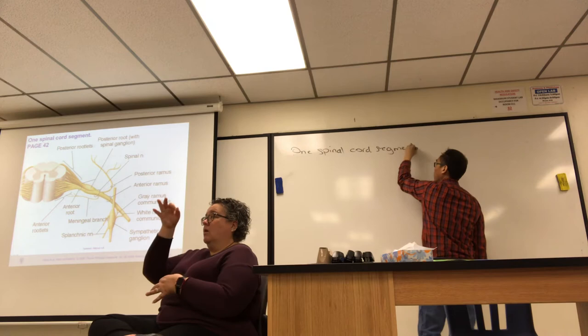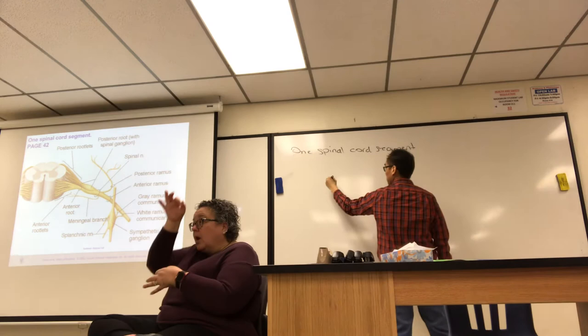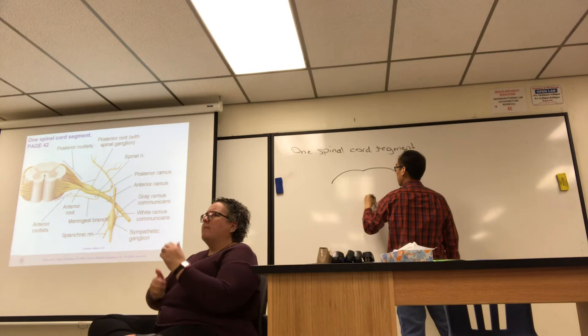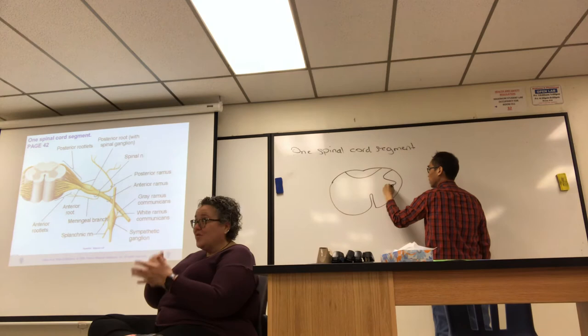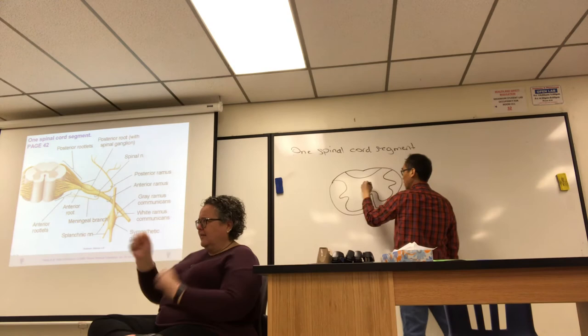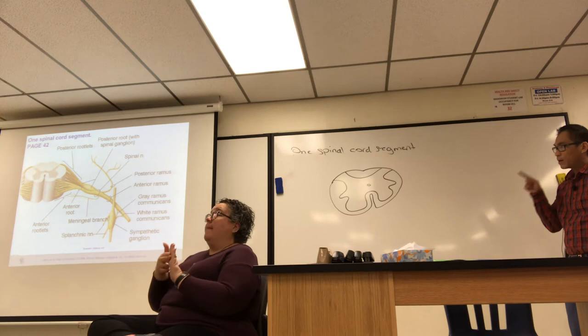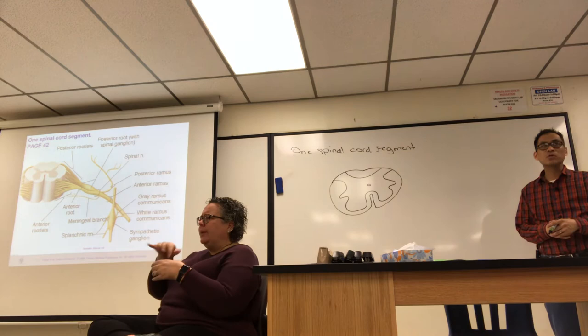The cross-section of a spinal cord segment has a butterfly shape. Right in the middle there is a small hole called the central canal, through which CSF flows up and down.